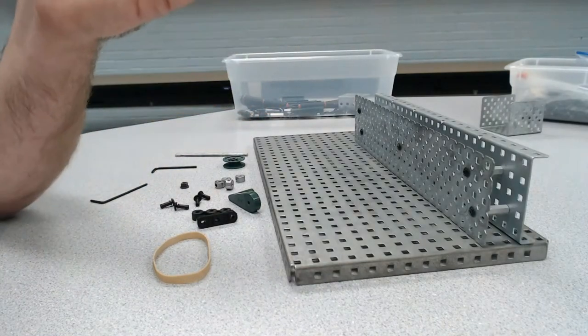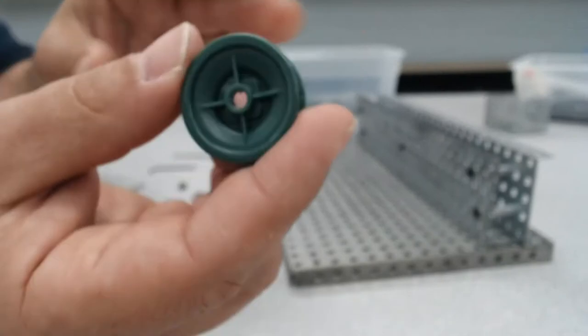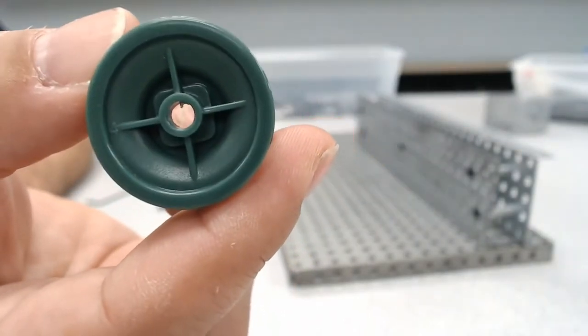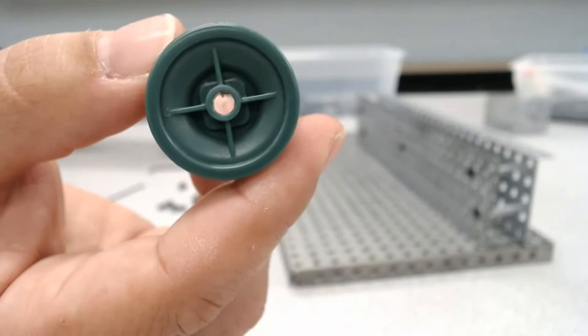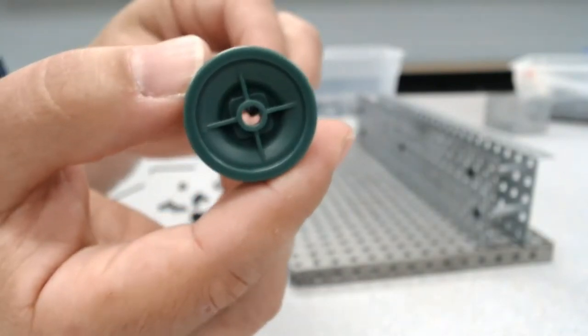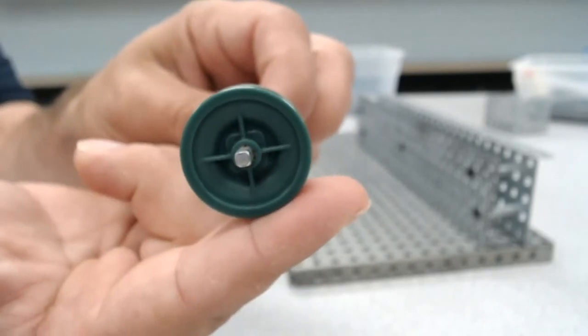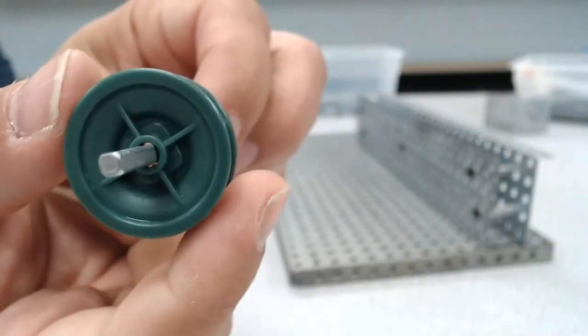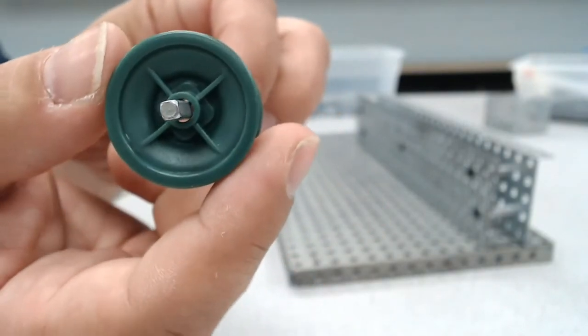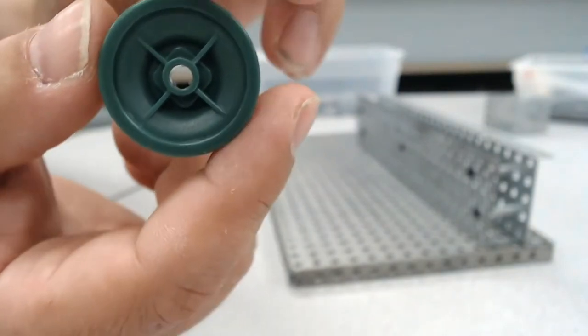So let's take a look in particular at what the issue is. The issue is actually the spot where the axle would go through. We actually have a round hole here but the axle that we use is square shaped, which means that this thing just freely spins on that axle and doesn't actually grip. So we need to modify it in order to make it fit.